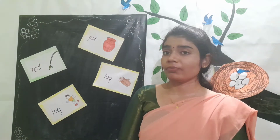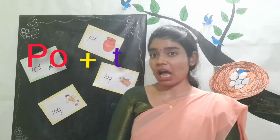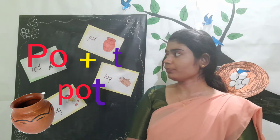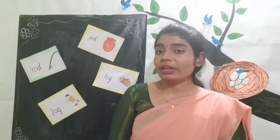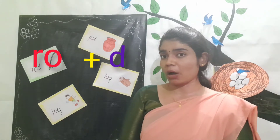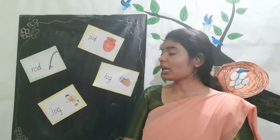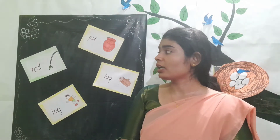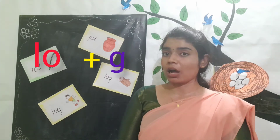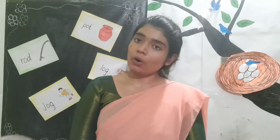Next, we add PO sound with T sound — we get the word POT. When we add RO sound with D sound, we get the word ROAT. At last, when we add LO sound with G sound, we get the word LOG.